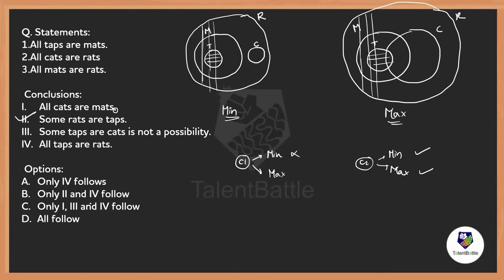Since Conclusion 2 follows, we can already eliminate options. Option A — only Conclusion 2 follows — might be possible. Options with Conclusion 1 are not valid since Conclusion 1 doesn't follow. Now checking Conclusion 3: some taps are rats is NOT a possibility. In the minimum condition there is no relation between tap and rat, so some taps are rats is not possible in the minimum — that's fine.